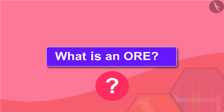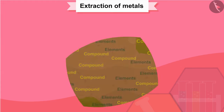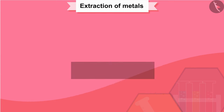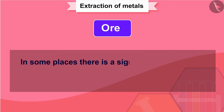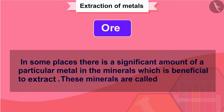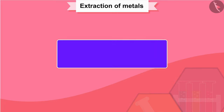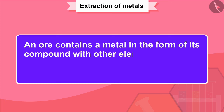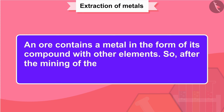Naturally found elements or compounds in the earth's crust are called minerals. In some places there is a significant amount of a particular metal in the minerals, which is beneficial to extract. These minerals are called ores. Ore contains a metal in the form of its compound with other elements.